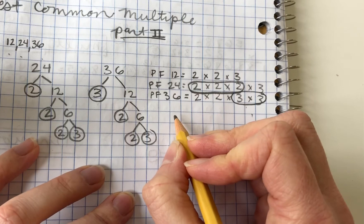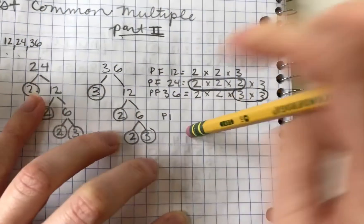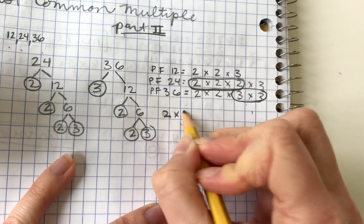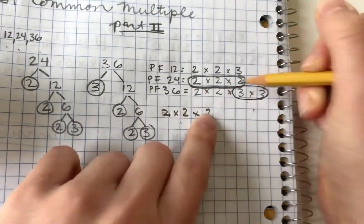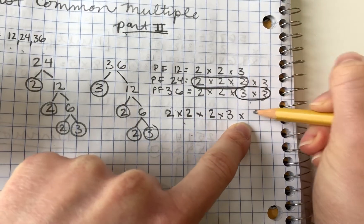We would multiply 2 times 2 times 2, which is from here, times 3 times 3.